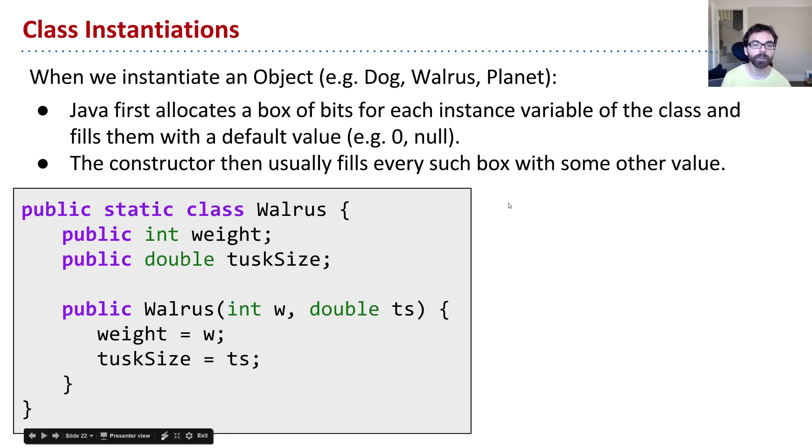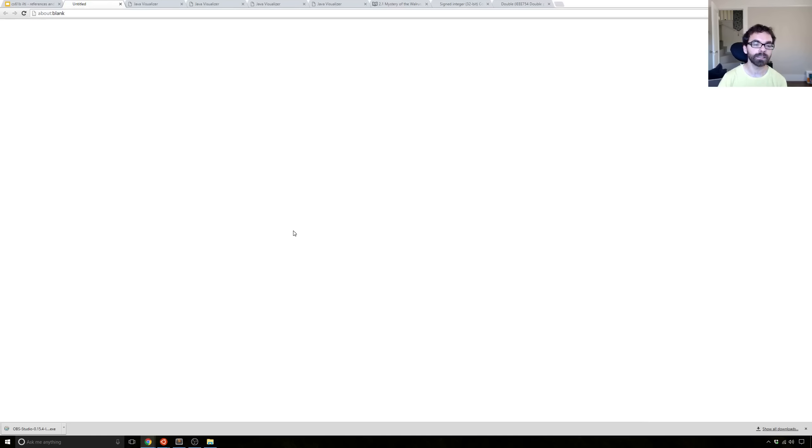So let's start digging into our understanding of reference types by discussing object instantiations. So whenever you say new dog, or new walrus, or new planet, or whatever, what Java is going to do is allocate a box of bits for each instance variable of the class. Here they are listed. And fill them with a default value, say 0 or null. And then the constructor will then usually fill every box with some other value. It doesn't have to, but in this case it will. So let's see an example.